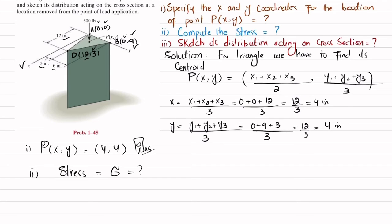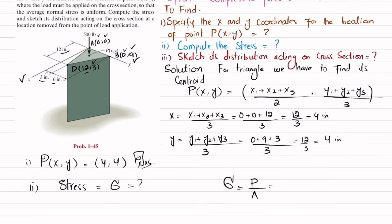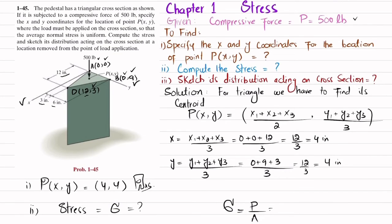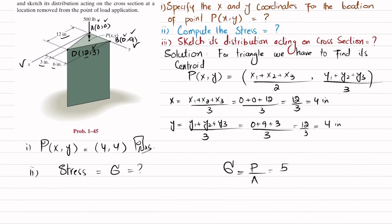Now in the second part, we have been asked to find the stress. We know that stress is equal to load per unit area. So the load is given as 500, which is compressive, divided by the area.